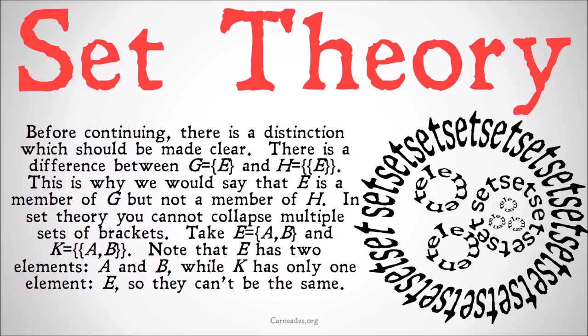This is why we would say that e is a member of g but not a member of h. In set theory, you cannot collapse multiple sets of brackets.